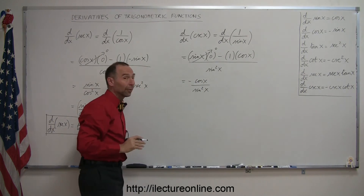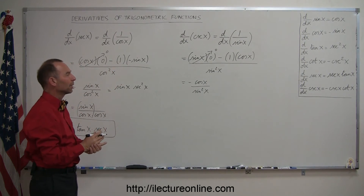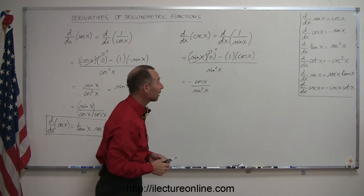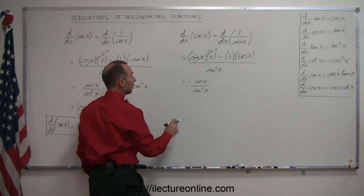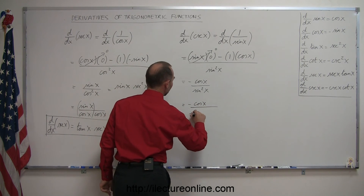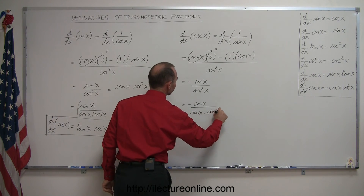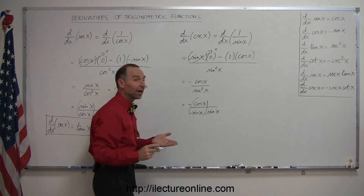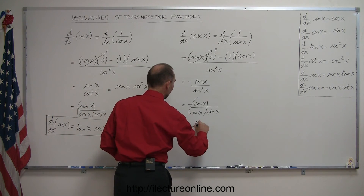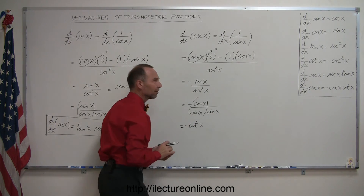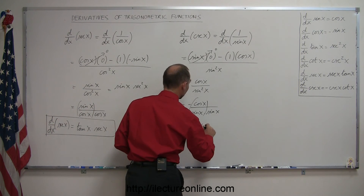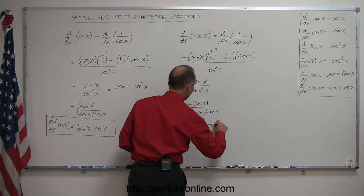That is the correct derivative of cosecant of x, but it's not in the standard form. We can rewrite negative cosine of x over sine squared of x as negative cosine of x over sine of x times 1 over sine of x. Cosine over sine is cotangent, and 1 over sine of x is cosecant of x. So this becomes negative cotangent of x times cosecant of x.